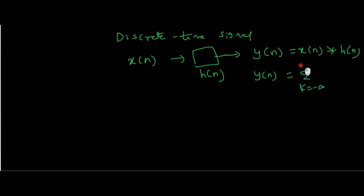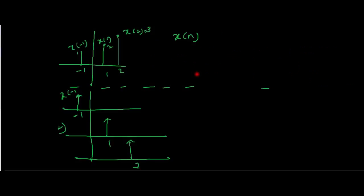For discrete time, Y(N) is expressed using a summation instead of an integral: Y(N) equals the summation from K equals minus infinity to infinity of X(K) times H(N minus K). What we are doing is multiplying X(K) at the K-th instant and multiplying it with the time-shifted impulse response H(N minus K). Let's now look at the idea behind the convolution theorem — how we get the output of an LTI system with input X(N) and impulse response H(N).